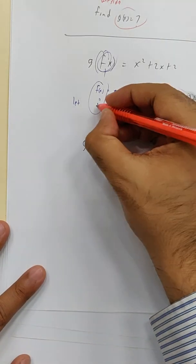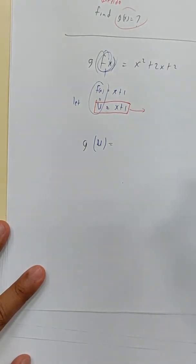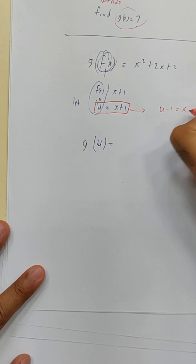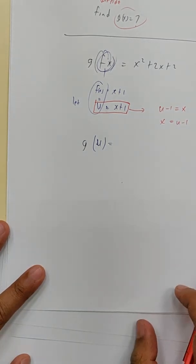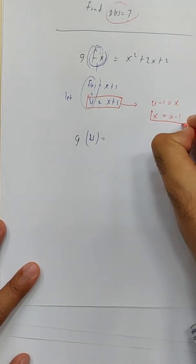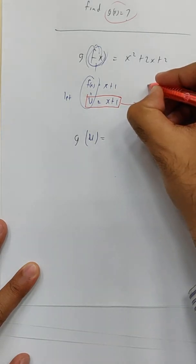Right? Also, from here, we can rearrange this one. U minus 1 equals to x, or just simply x equals to U minus 1. Just rearrange them. And what should we do with this one? Substitute inside here.